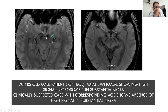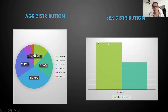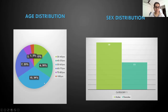Here is an MR axial SWI image of a 70-year-old male control showing high signal nigrosome 1 in the substantia nigra on the left side indicated with a green arrow. A clinically suspected case of corresponding age shows absence of high signal in the substantia nigra on either side.